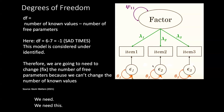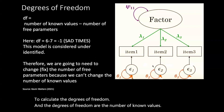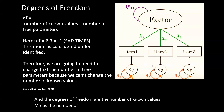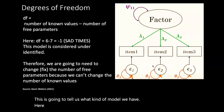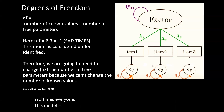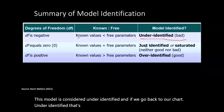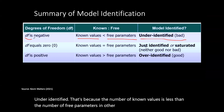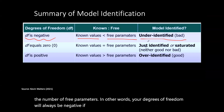We need this to calculate the degrees of freedom — the number of known values minus the number of free parameters. This tells us what kind of model we have. Here, degrees of freedom equals six minus seven, because we had six known values and seven free parameters, giving us a value of negative one. This model is considered under-identified, because the number of known values is less than the number of free parameters — your degrees of freedom will always be negative in this situation.